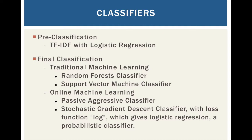As for the classifiers, we use two levels of classification: pre-classification with TF-IDF with logistic regression, and final classification where we classify all features altogether using traditional machine learning algorithms like Random Forest classifiers and Support Vector Machine classifiers. We also use online machine learning — instead of training locally with a large dataset, we train the model incrementally with one new data point and then another. We first tried a passive-aggressive classifier, which didn't work out well, and then we came up with the idea of a stochastic gradient descent classifier with loss function log, which gives logistic regression a probabilistic classifier. The way we use the SGD classifier with our pre-classification layer is different from all previous work.